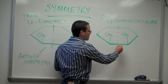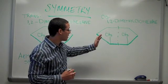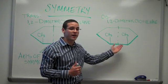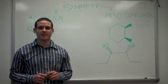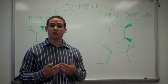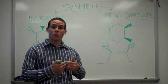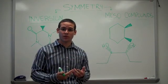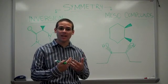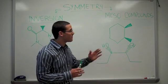We have reflectional symmetry because the right side reflects the left side and vice versa. Chirality depends on reflectional symmetry. A compound that contains two or more chirality centers and reflectional symmetry makes the compound achiral. Those compounds are called meso compounds.